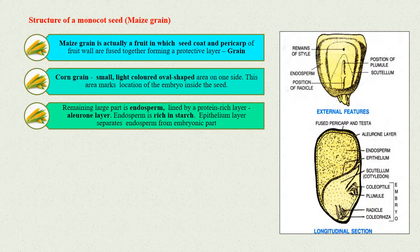The remaining large part is endosperm, which is lined by a protein-rich layer called aleurone layer. The endosperm is rich in starch. A thin epithelium layer separates the endosperm from the embryonic part.